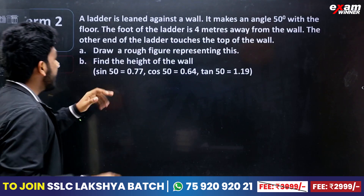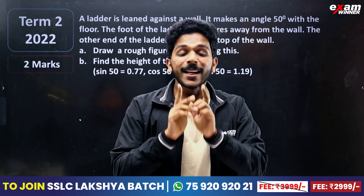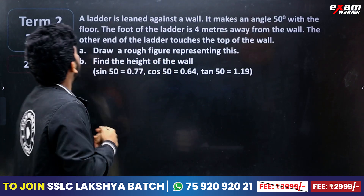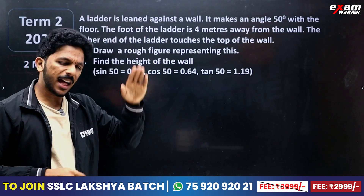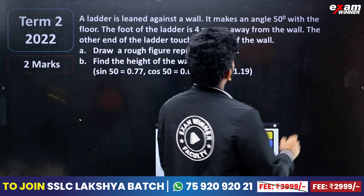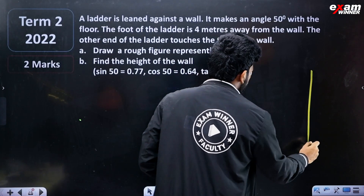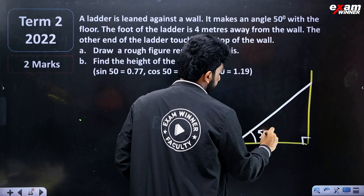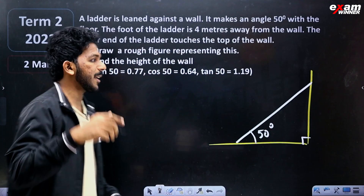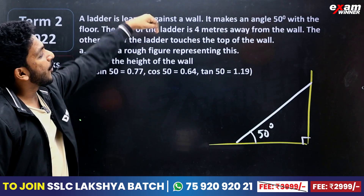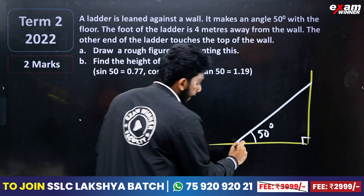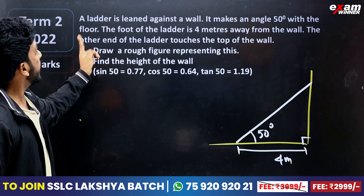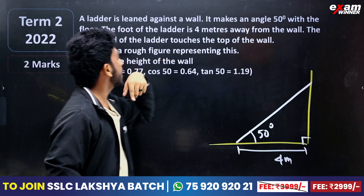Here we have one more question. The next question is for the Christmas exam — it is very important. A ladder is leaned against the wall. It makes an angle of 50 degrees with the floor. This is 90 degrees. The foot of the ladder is 4 meters from the wall. The other end of the ladder touches the wall on the top.